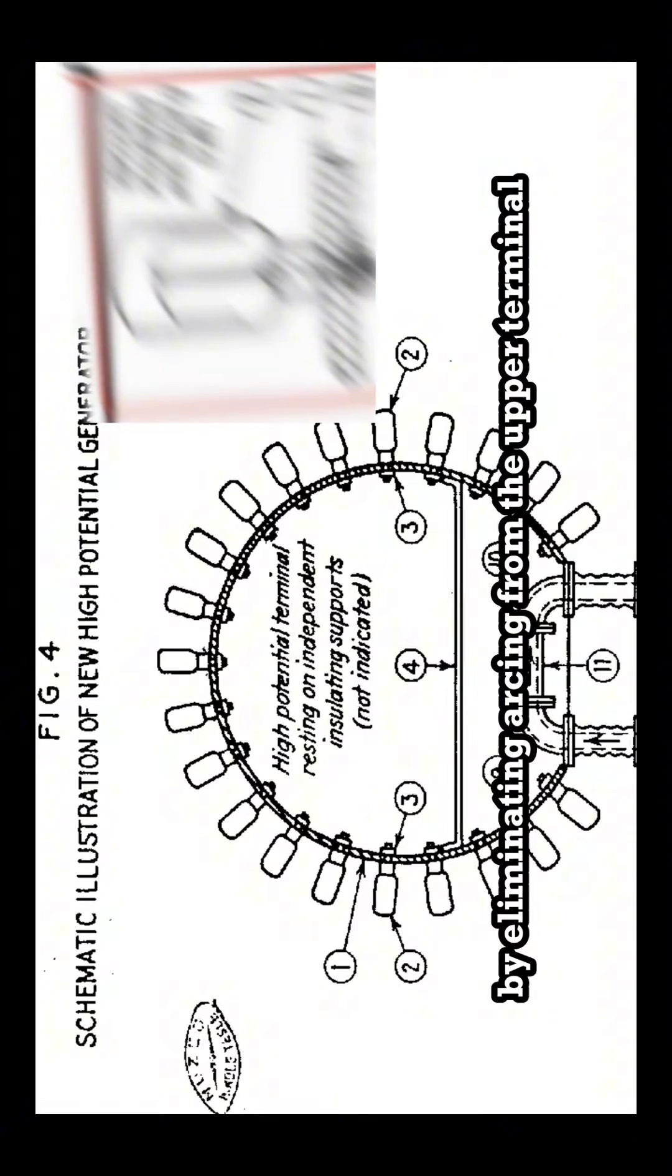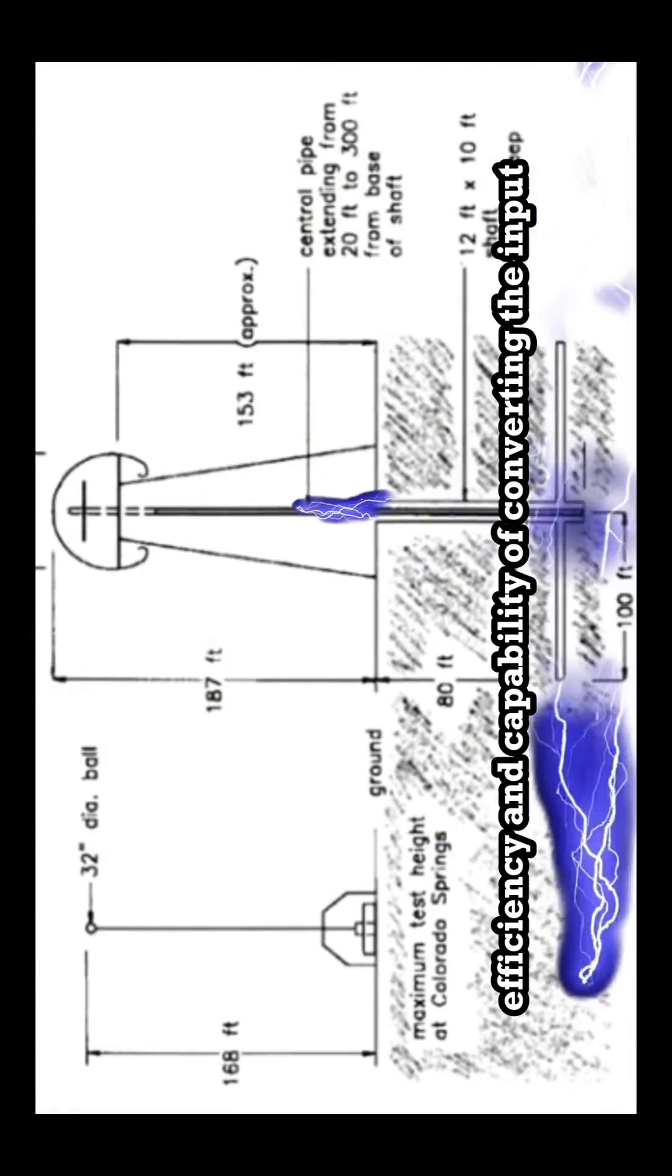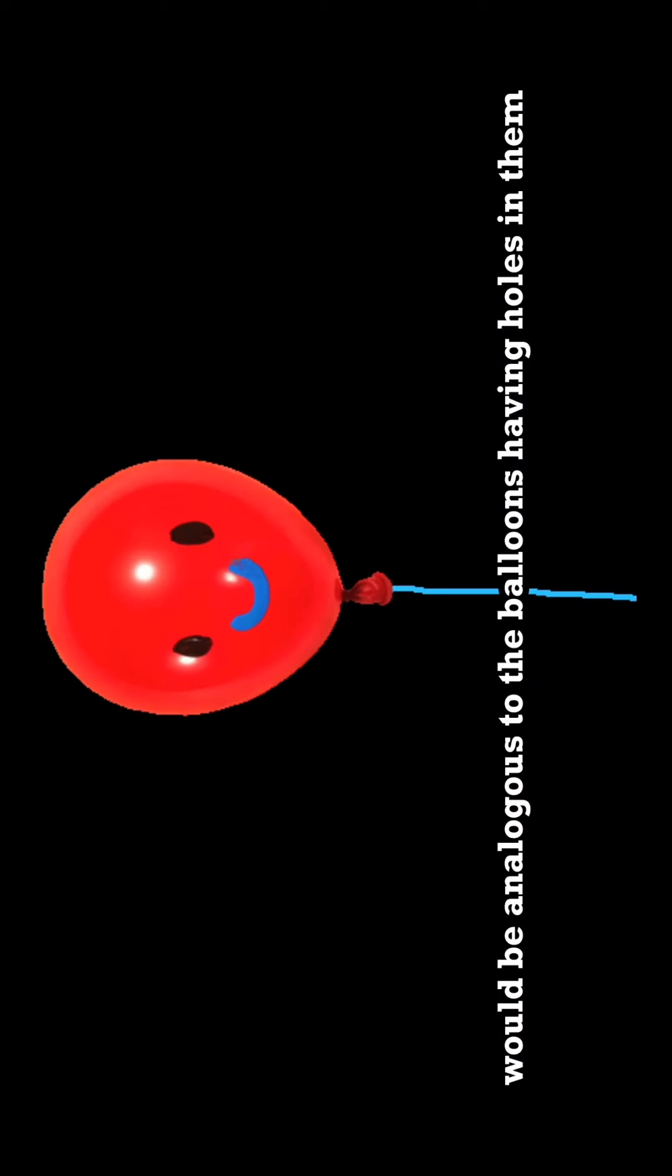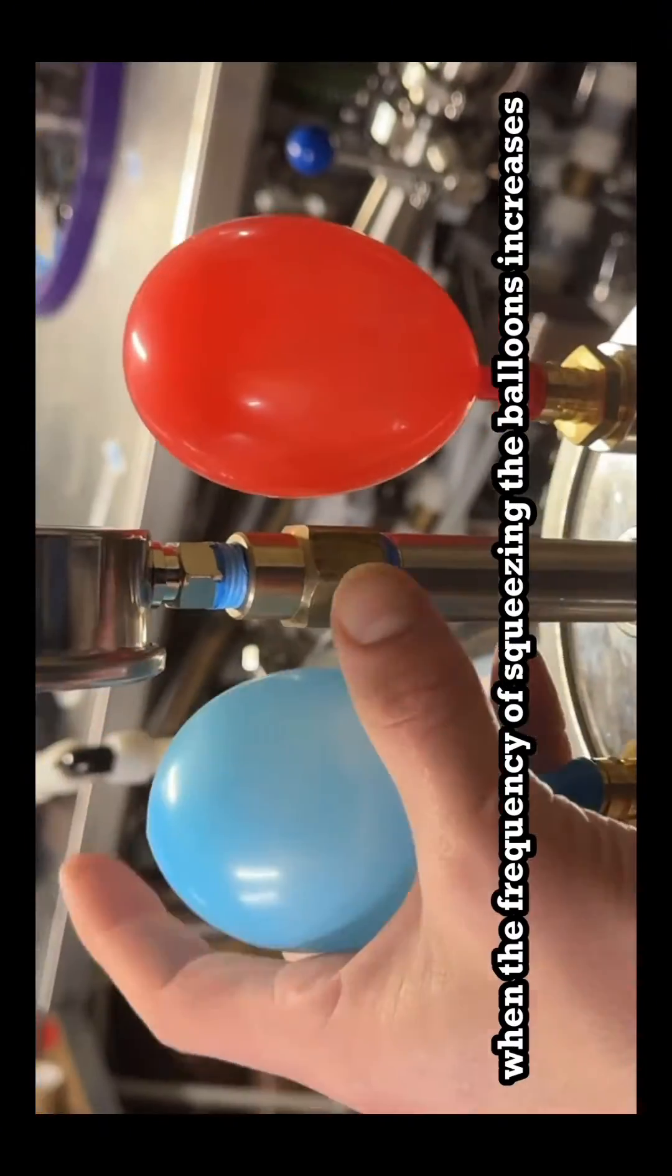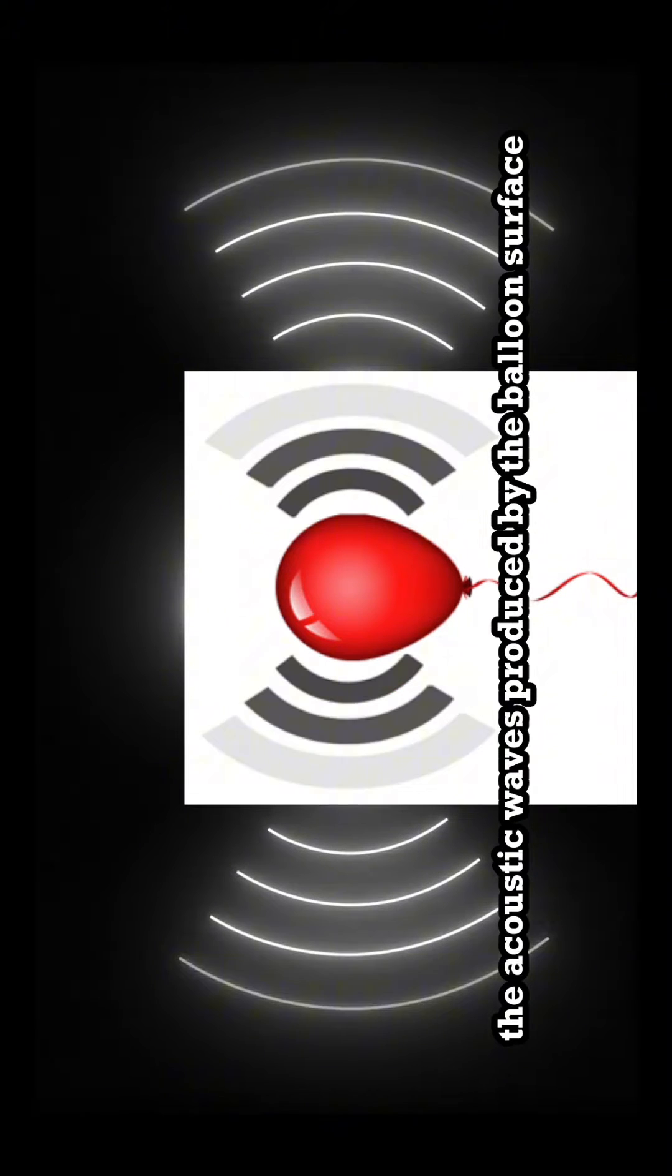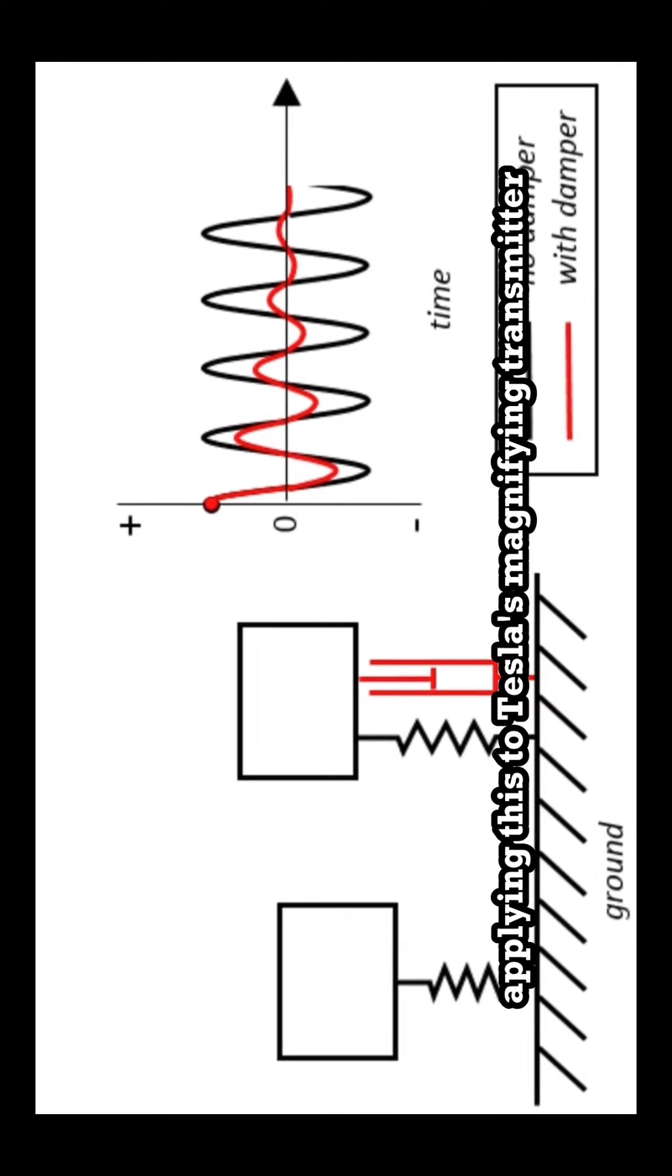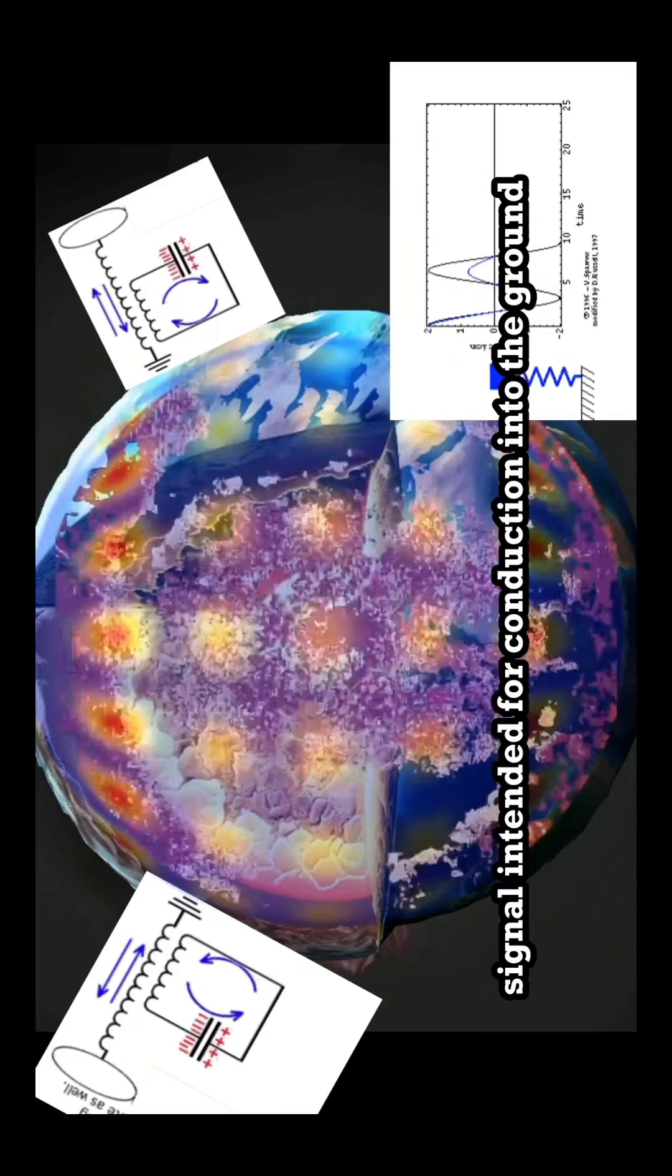By eliminating arcing from the upper terminal and reducing electromagnetic radiation, Tesla made a significant leap in the transmitter's efficiency and capability of converting the input energy into electrical energy conducted into the ground. In other words, having an upper terminal that's arcing off into the air would be analogous to the balloons having holes in them, losing potential energy as the air rushes out each time the balloons fill up. This dampens the power signal bounced back into the ground. In a similar vein, when the frequency of squeezing the balloons increases, there are eventual losses from the rapid back-and-forth movement of air surrounding the balloons. The acoustic waves produced by the balloon's surface can be likened to a damping of the power signal. Applying this to Tesla's magnifying transmitter, as the frequency escalates, more oscillating electromagnetic EM energy dissipates into the air from the upper terminal. This results in analogous damping of the input power signal intended for conduction into the ground.